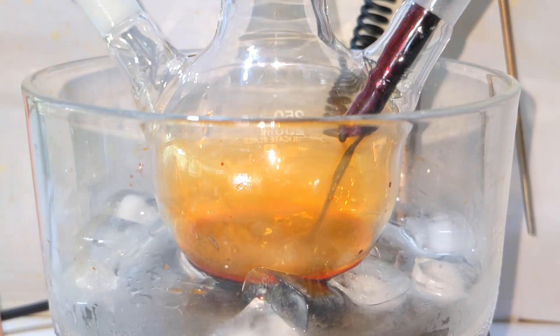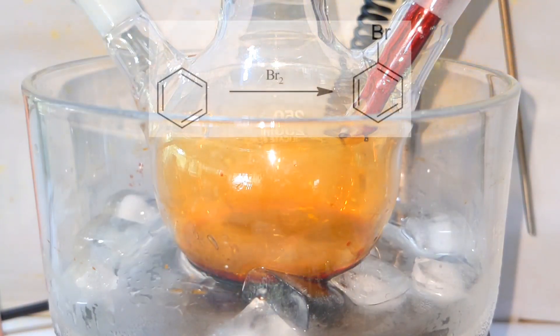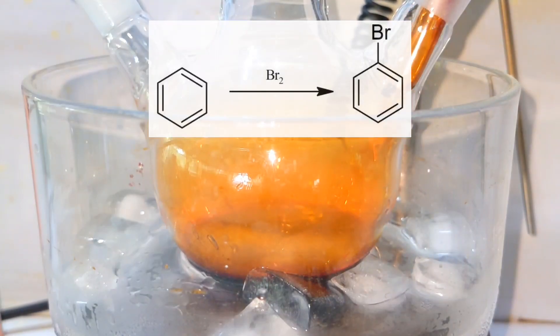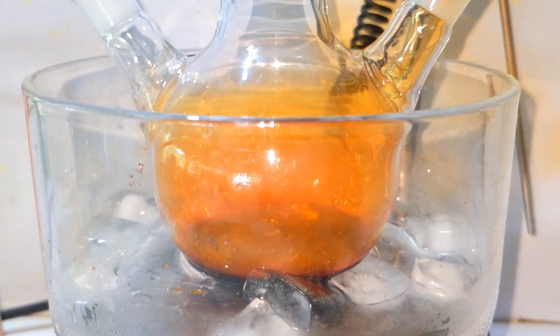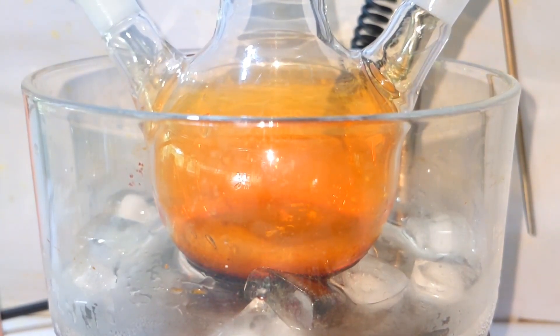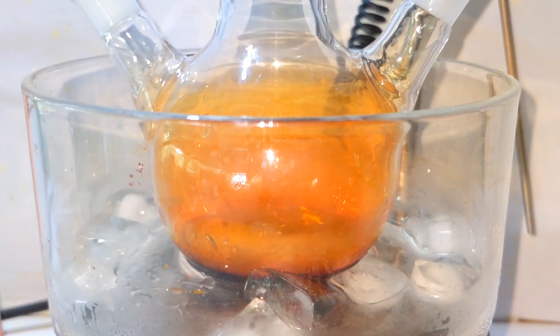Continuously stir until the vigorous reaction settles down. What is happening here is the direct bromination of benzene in the presence of a halogen carrier like pyridine to form bromobenzene and the side product hydrobromic acid. Hydrobromic acid is produced as vapors and collected through the rubber tubing into water where it dissolves.